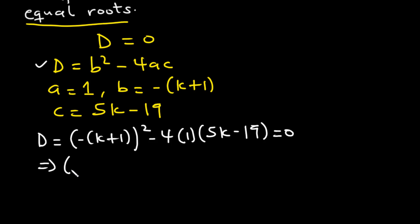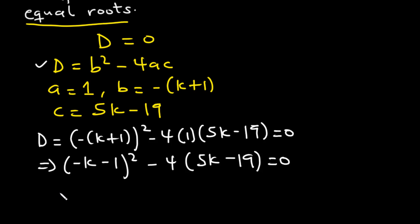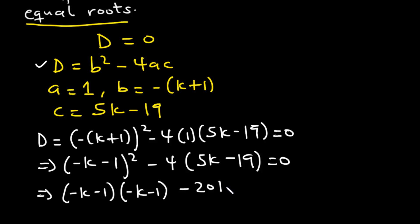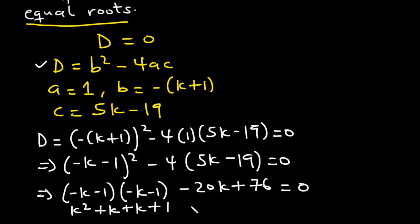Now let's multiply negative 1 across. So it's going to be negative k minus 1 squared minus 4 times bracket 5k minus 19 equals 0. Expanding: negative k minus 1 times negative k minus 1, then minus 4 times 5k is minus 20k, and negative 4 times negative 19 is plus 76.